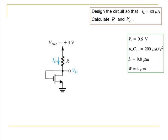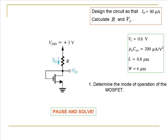Let us look at another problem. In this problem also, you are given the value of the drain current and you are asked to calculate the values of the resistance and the drain voltage. Some of the constants involved in the calculations are given on this screen. As in the previous case, the first step is to determine the mode of operation of the MOSFET. Why don't you think about this and try to figure out what mode the MOSFET will be operating in.